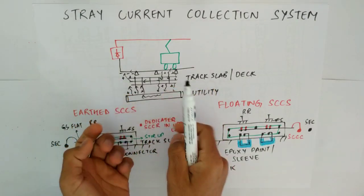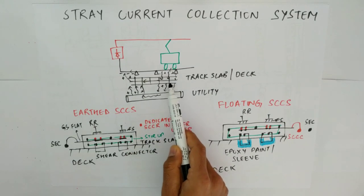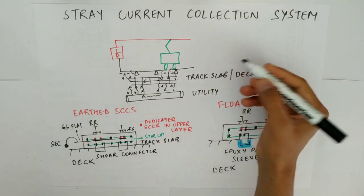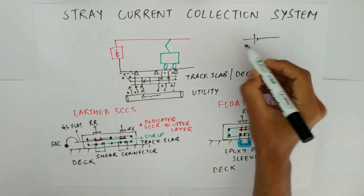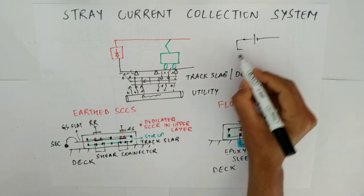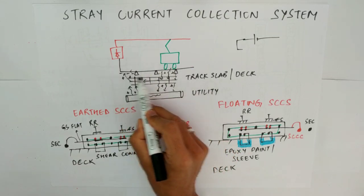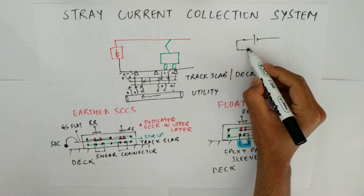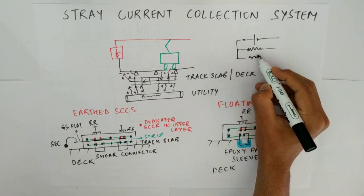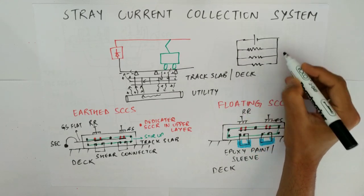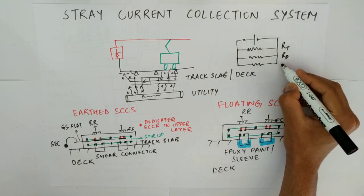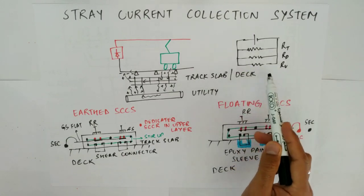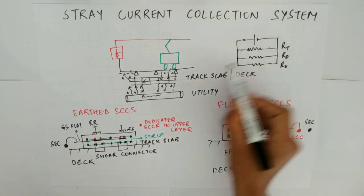The SCCS will catch the stray current which is leaking from the running rails in this stray current collection net and not allow the current to leak further down. Now if we draw a circuit diagram — this is your potential which is causing the stray current. Once the stray current is leaking due to running rail potential, it enters the system, goes into the track slab, then into the deck, and from here further into the utility. So in order to keep the current flowing in the track slab itself and not letting it go below, we can reduce the resistance of the track slab.